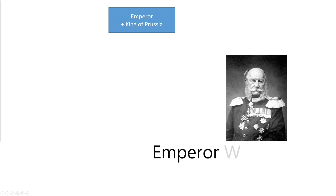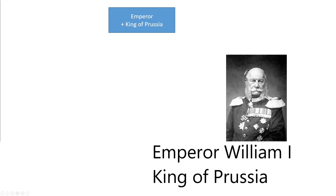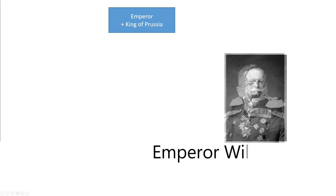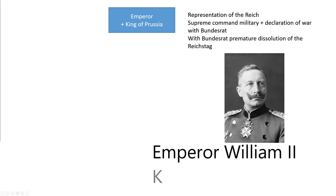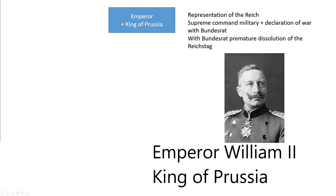The emperor of the German Empire was also king of Prussia. The emperorship was hereditary. If an emperor died, the office was passed on to his eldest male descendant. He represented the German Empire externally, had supreme command over the military and the navy, and could declare war together with the Bundesrat, as well as dissolve the Reichstag prematurely together with the Bundesrat. There was no real separation of powers with legislature, executive and jurisdiction, rather a kind of intertwining of powers.